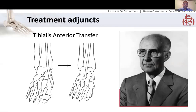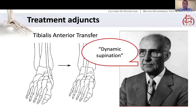An adjunct to treatment is the tibialis anterior transfer. This is used when you have dynamic supination — clinically seen as the forefoot supinating during swing phase, or when the child sits on the edge of the bed and dorsiflexes their foot into mild supination. This may be an indication after around 30 months to transfer the tibialis anterior from medially to the lateral cuneiform. This is regarded as a treatment adjunct, not a failure of treatment.